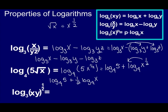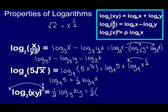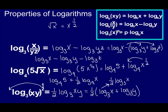In this last example, it's the whole expression under the square root, not just one term. We still have a multiplication, but I'm going to pull out the exponent first. That gives 1/2 log base 3 of XY. We can split XY up as log base 3 of X plus log base 3 of Y. So that's 1/2 times parentheses log base 3 of X plus log base 3 of Y. Distributing, the final answer is 1/2 log base 3 of X plus 1/2 log base 3 of Y.